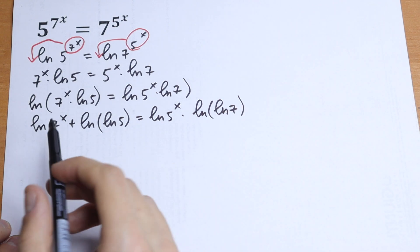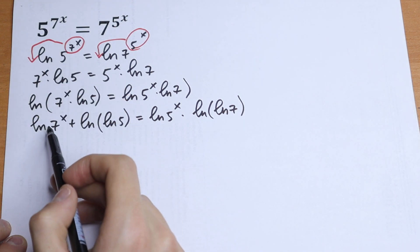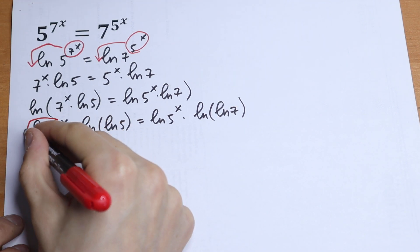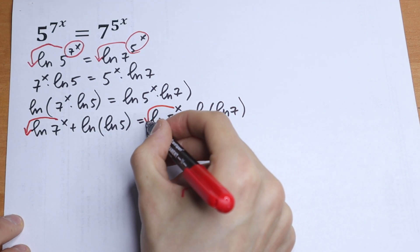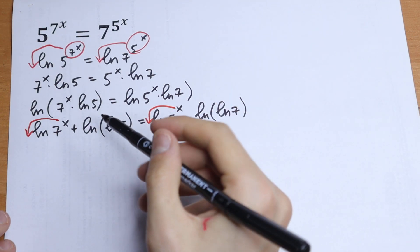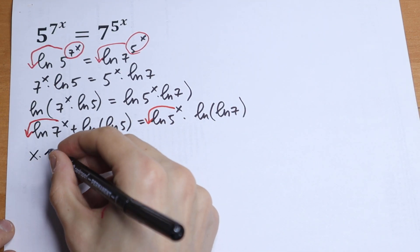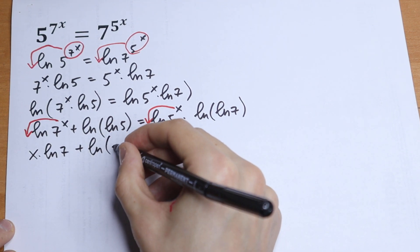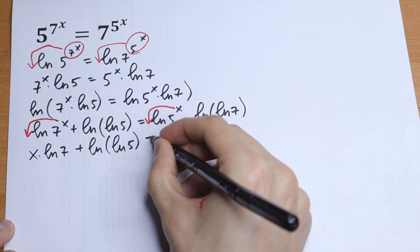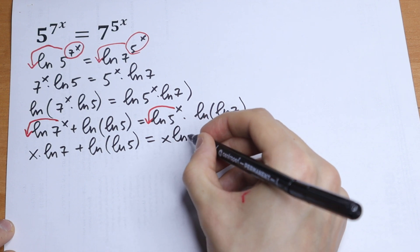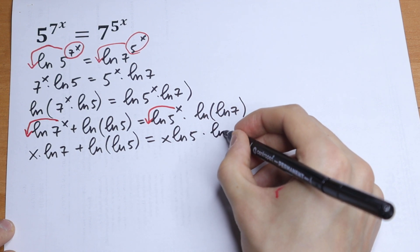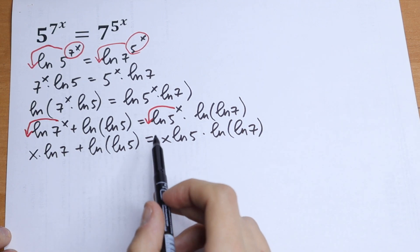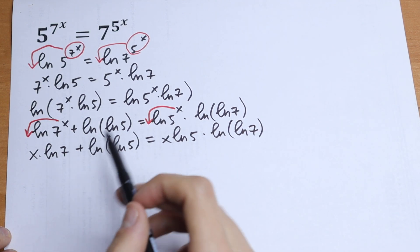What are we going to do next? We can bring x to the front. We can write this x right here and this x right here. So we will have x times natural log 7 plus natural log of natural log 5 equal to x times natural log 5 plus natural log of natural log 7. So we just bring x to the front.